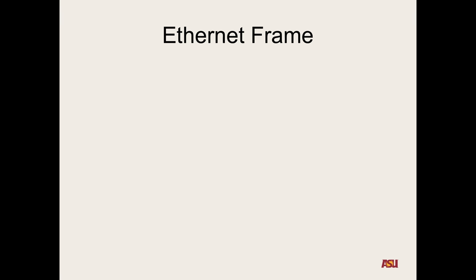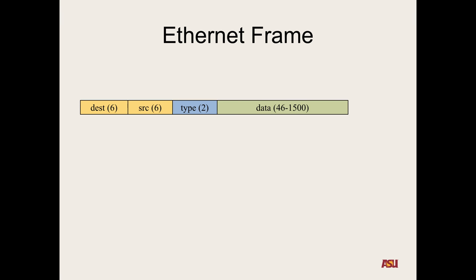So Ethernet is actually a little bit simpler than IP. It's a link level thing just between you and the next machine — it doesn't have to be so complicated that it has to work across the entire internet. So we first have the destination host in six bytes, our source Ethernet address in six bytes, we have a type, some data — variable length up to 1500 bytes — and a CRC checksum at the end to make sure there weren't any transmission errors.